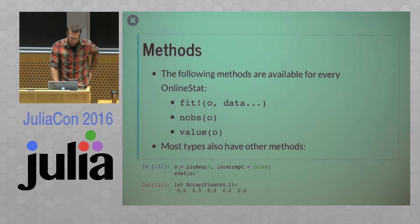And most types also have other methods available. So for example, this linear regression type, which does exact linear regression, has a coefficient method. And there's some things that are kind of hidden there. So online variance, you also have to calculate the online mean. So there's a mean method for the variance object and a few other things, but those are in the documentation.